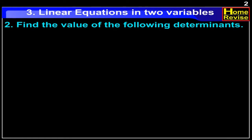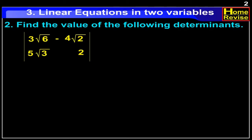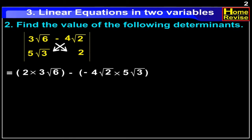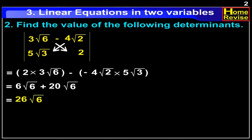Find the value of the following determinant. The determinant [3√6, -4√2; π√3, 2] is equal to 2 into 3√6 minus (−4√2) into 5√3, which is equal to 6√6 plus 20√6, which is equal to 26√6.